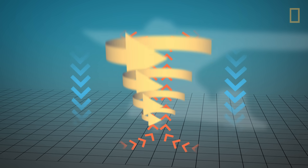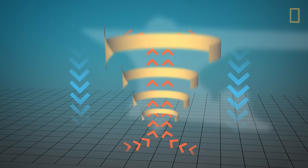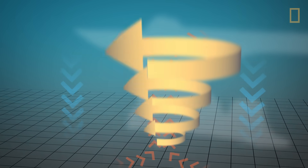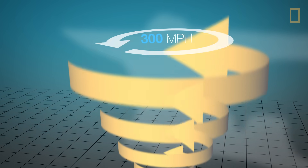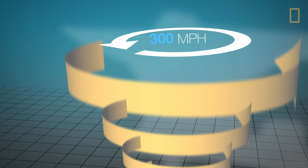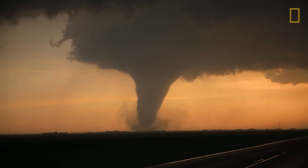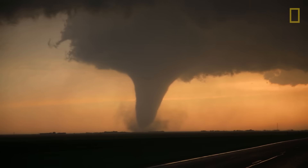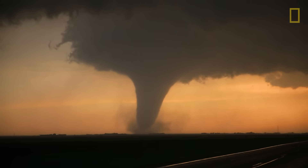The vortex spins like a top, sometimes up to 300 miles per hour. And while some tornadoes move slowly, others can travel over the ground at speeds of over 110 miles per hour.